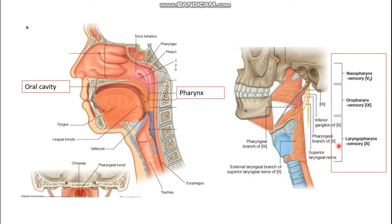The third part is the laryngopharynx. The nasopharynx is the part of the pharynx present behind the nasal cavity, the oropharynx is the part present behind the oral cavity, and the laryngopharynx is called so because it is present behind the larynx. The blue portion you can see here represents the laryngopharynx.